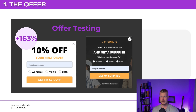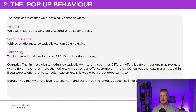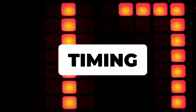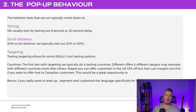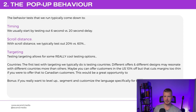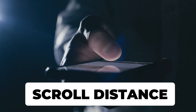The next thing to test is pop-up behavior. We typically start with timing — a 6-second versus a 20-second delay. You don't want the pop-up to appear immediately and bother people, but you also don't want to delay it so long that people miss it and don't get into your ecosystem. Next is scroll distance — we typically test 20% versus 60% scroll distance.